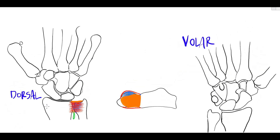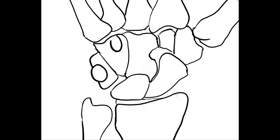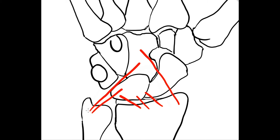The wrist is stabilized by dorsal and carpal ligaments. There are various nomenclatures for these ligaments, but the basic idea is that there are dorsal radiocarpal ligaments, dorsal ulnocarpal ligaments, palmar radiocarpal ligaments, and palmar ulnocarpal ligaments. Going into further detail, the palmar radiocarpal ligaments can be described as the radioscaphocapitate ligament, the radioscapholunate ligament, the short radiolunate ligament, and the long radiolunate ligament. The palmar ulnocarpal ligament can be described as the ulnolunate ligament, the ulnocapitate ligament, and the ulnotriquetral ligament.